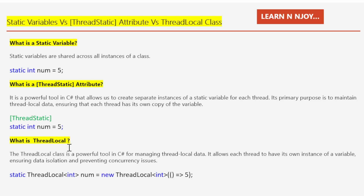What is ThreadLocal? The ThreadLocal class in C# is used for managing thread-local data. It allows each thread to have its own instance of a variable, ensuring data isolation and preventing concurrency issues. To instantiate it, we create an instance of ThreadLocal of type int, give it the variable name 'num', and pass a lambda expression as an argument to the ThreadLocal constructor.